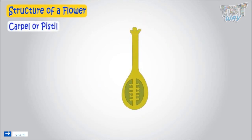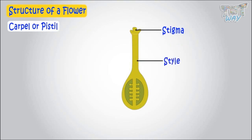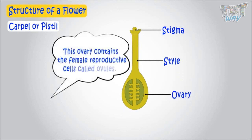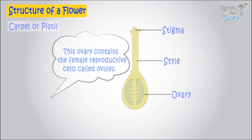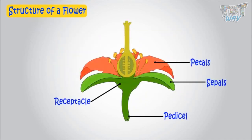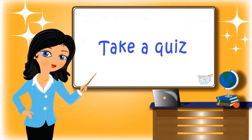The pistil consists of a sticky structure called the stigma, which is attached to a long tube-like structure called the style. The style ends in a swollen part called the ovary, and this ovary contains the female reproductive cells called ovules. So kids, we learned about the structure of a flower, and in our next lesson we will learn how this flower produces seeds, which in turn produce new plants. Now go ahead and take a quiz to learn more!